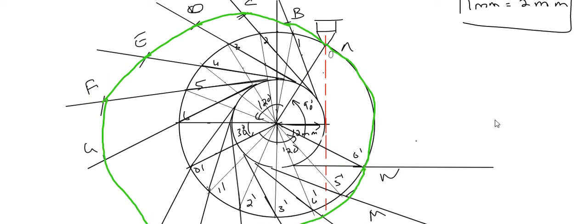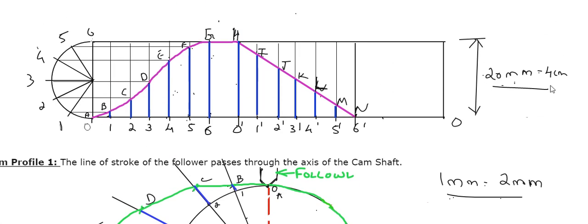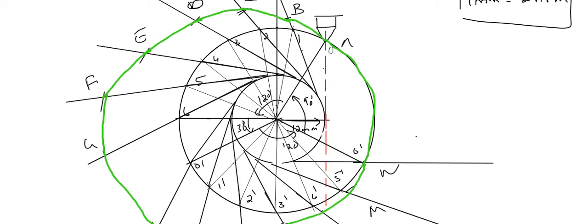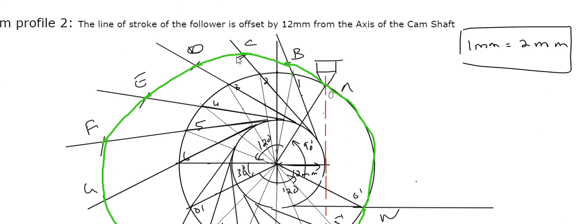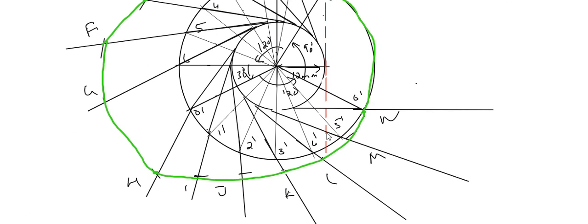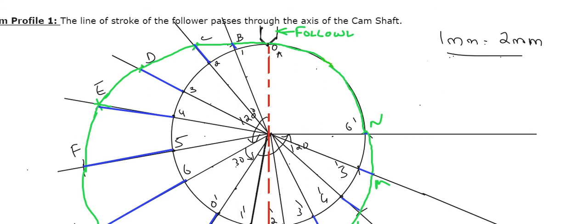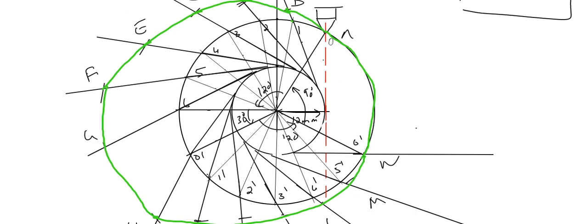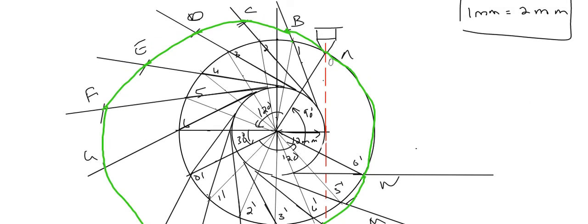This is the offset cam profile. To summarize: first draw the base circle, then the offset circle, both to the same scale as the displacement diagram lift. Divide the outstroke and return stroke arcs into the same number of parts as the displacement diagram. Mark the division points on the circumference and draw tangents from each point to the offset circle. Extend the tangents and determine points B, C, D, E, F using the blue-line measurements from the displacement diagram, then connect them with a smooth curve. This is how you draw the offset cam profile. The same procedure applies to flat surface followers with slight differences. Thank you.